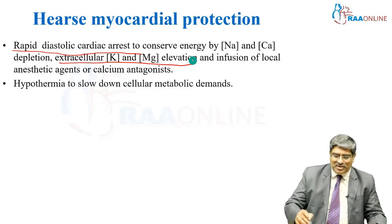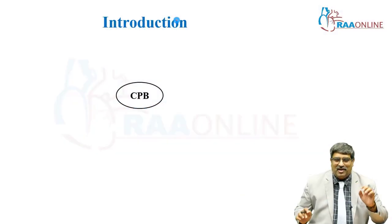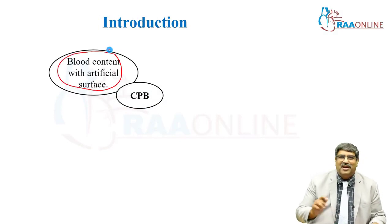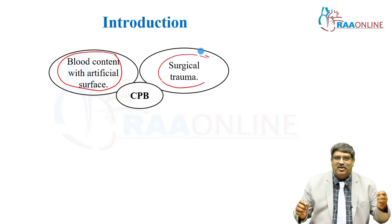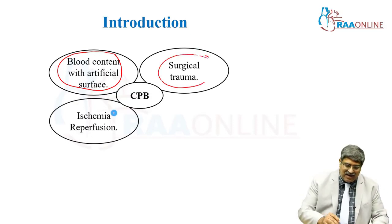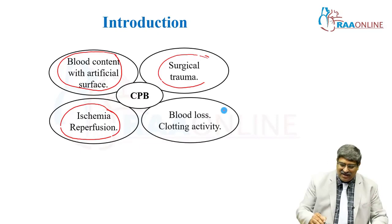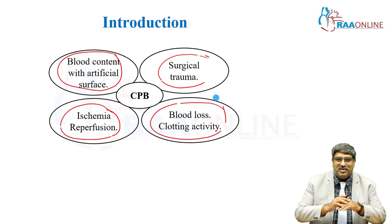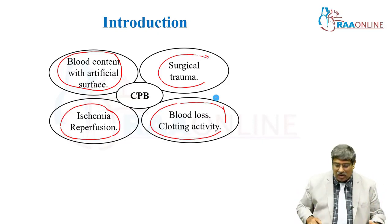Second is hypothermia. When you put the patient on cardiopulmonary bypass, there is blood contact with an artificial surface. There is going to be surgical trauma, and once you rewarm and come off bypass, there is going to be reperfusion. Ischemia-reperfusion injury can happen, and you have to anticoagulate the patient on an artificial surface, so blood loss and coagulation activity will be altered.